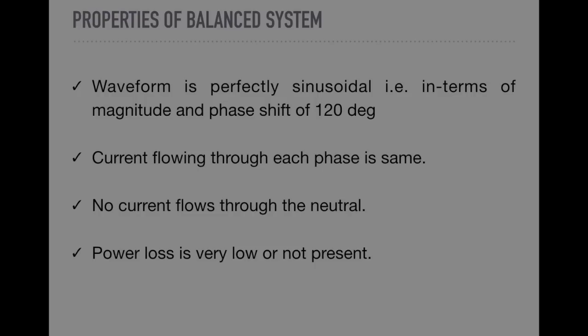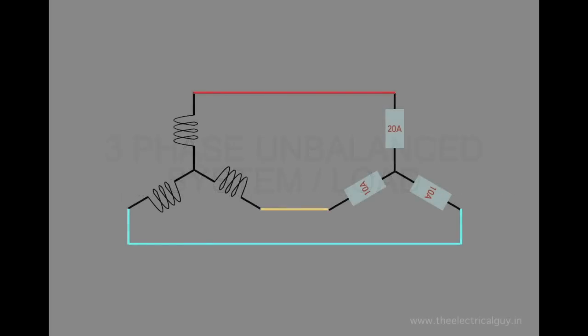Most of the systems are unbalanced like our distribution system. And the properties of unbalanced systems are completely opposite of what we have seen just now. Now let's increase the load on one of the phases of our system. As we have increased the load on one phase, it will draw more current than the other two phases, and this will create imbalance in the system.